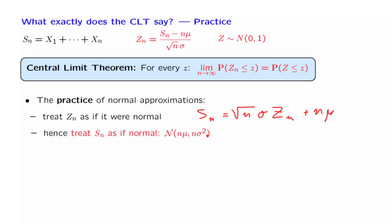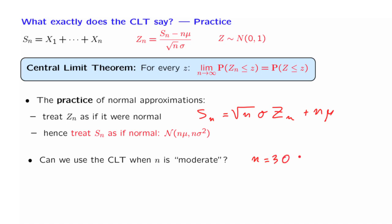If we know mu and sigma squared, and using the normal approximation, then we have an approximate distribution for Sn, and we can go ahead. Now, in practice, can we use the central limit theorem when n is moderate — for example, if n is 30? This is a relation that's true in the limit of very large n. How large should n be? It turns out that the central limit theorem gives us very good approximations even when n has moderately small values, though the approximations will sometimes be better and sometimes worse.